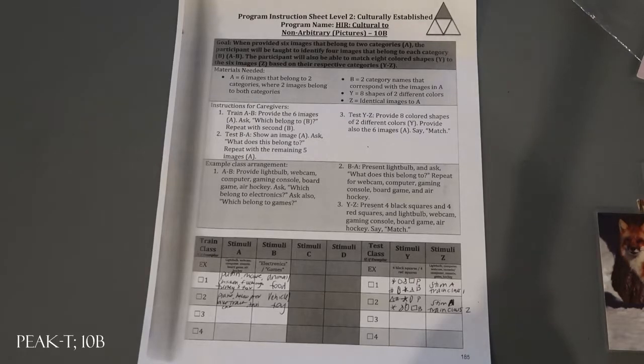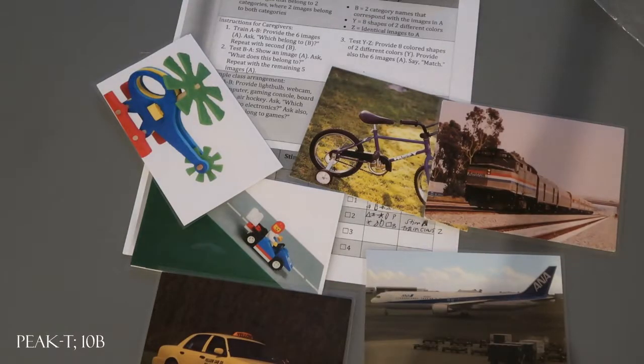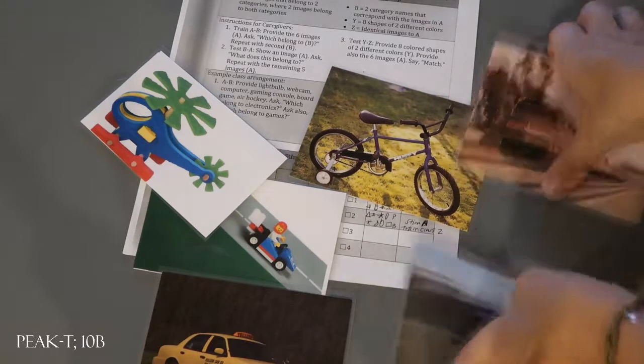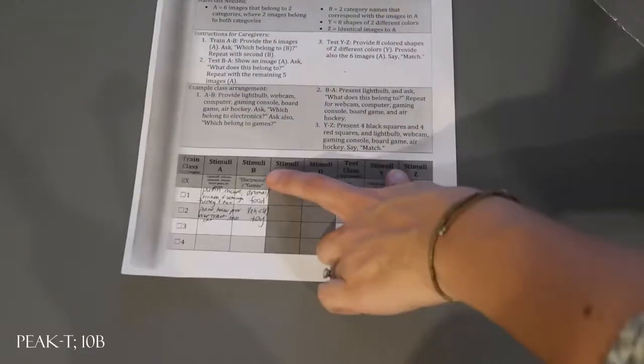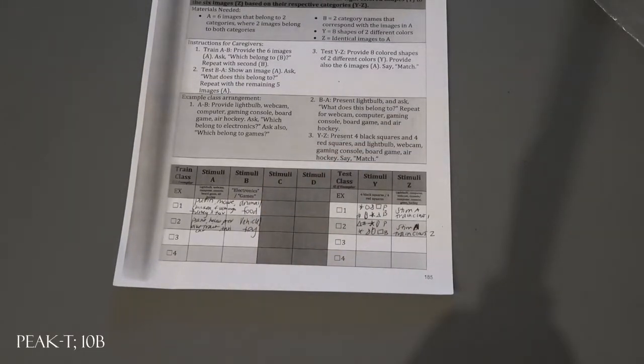For a quick run-through you have three blocks here. Train class is A to B, you're prompting, providing feedback, reinforcing. You're going to give the participant the six images and you're going to say which belongs to vehicles. They should hopefully point to or pick them all up. Which belong to toys? They should pick these two. You're prompting, giving feedback, reinforcing, but they need to answer both of those questions within one trial. So you're going to have two questions per trial. What belongs to animals, what belongs to food is trial one. What belongs to vehicle, what belongs to toy is trial two. You're going to ask those sequentially.